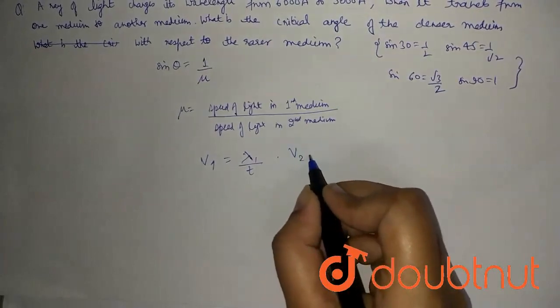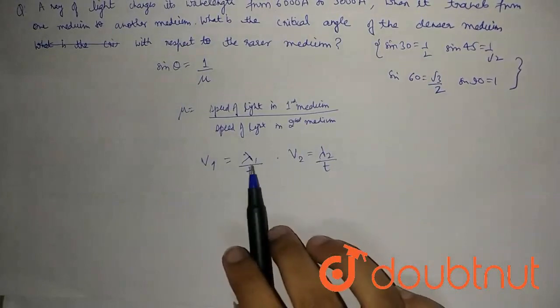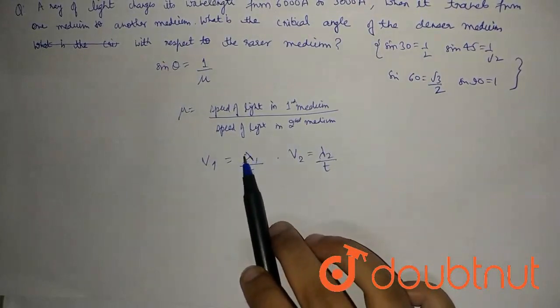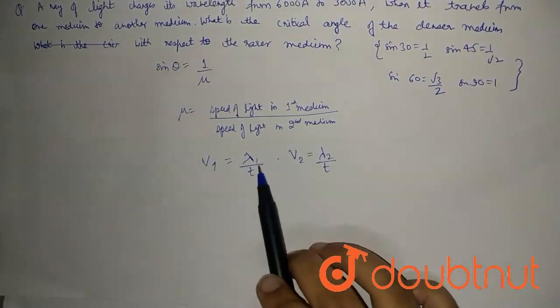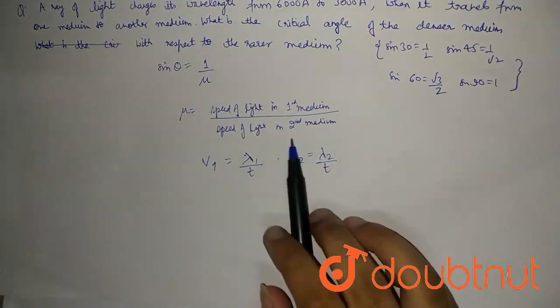Speed of light in second medium will be λ₂ / t. So the first medium was λ₁ and the second medium was λ₂, the first medium was v₁ and the second medium was v₂.